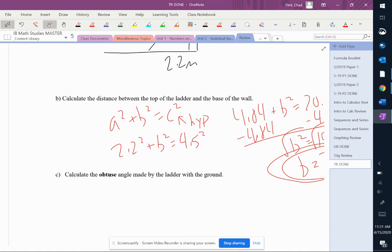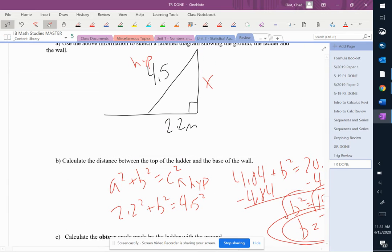Calculate the obtuse angle made by the ladder with the ground. So now it wants this angle. They're being a little evil with this question. We can find this angle, and then those two angles, this one and this one, equal 180.